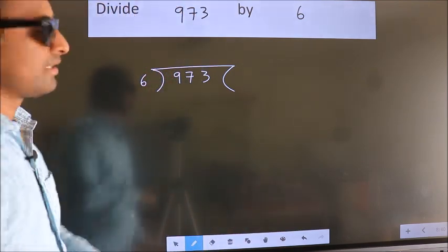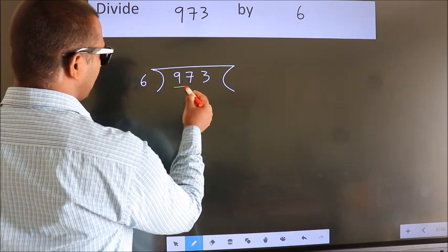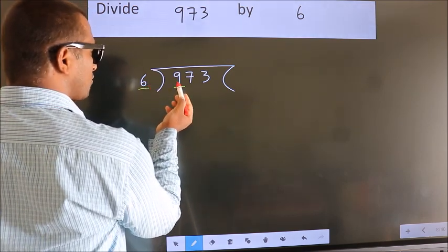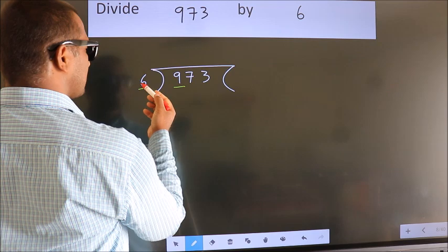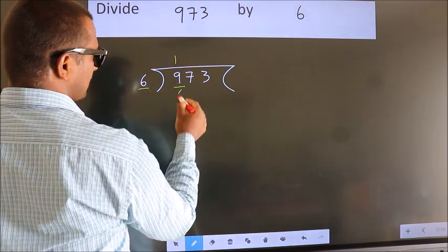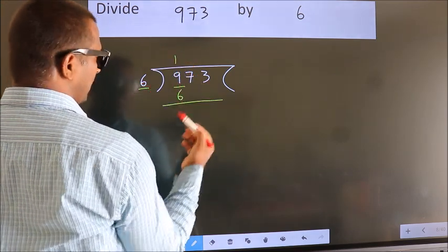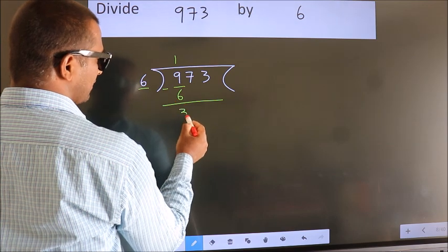Next, here we have 9, here 6. A number close to 9 in the 6 times table is 6 times 1, which is 6. Now we subtract and get 3.